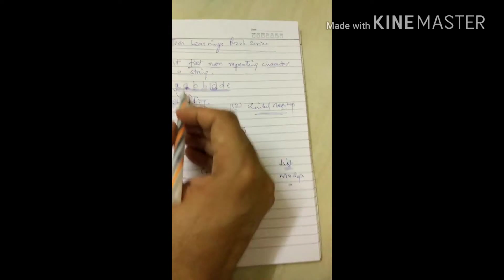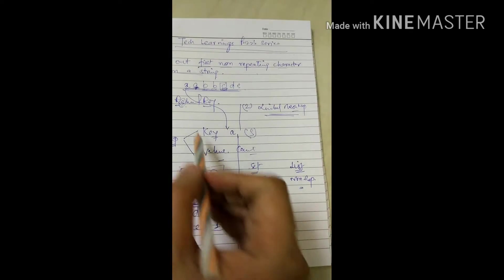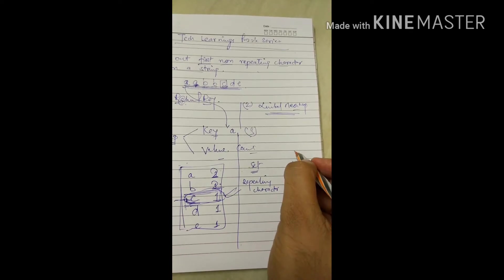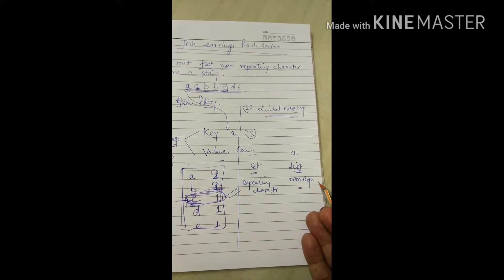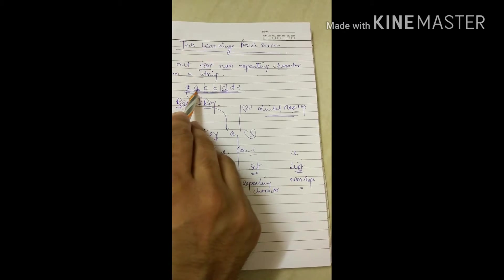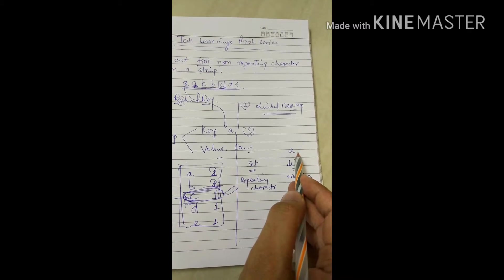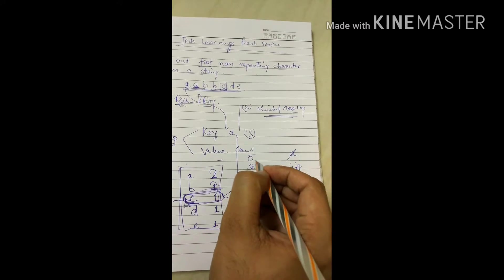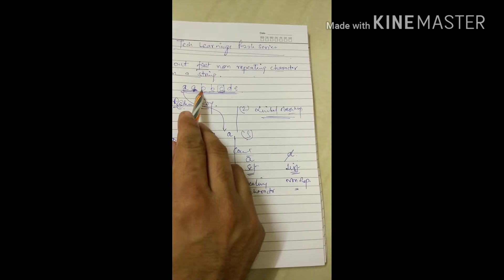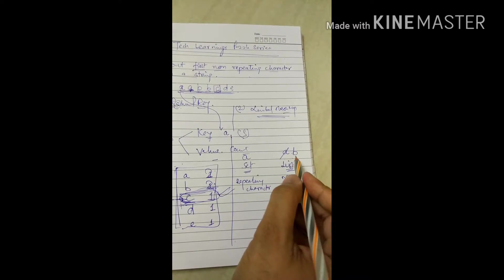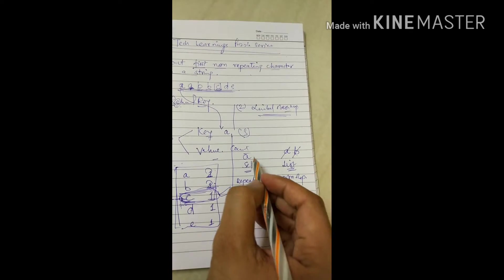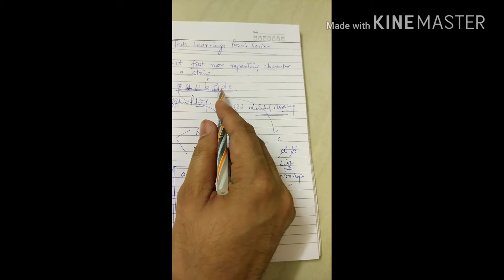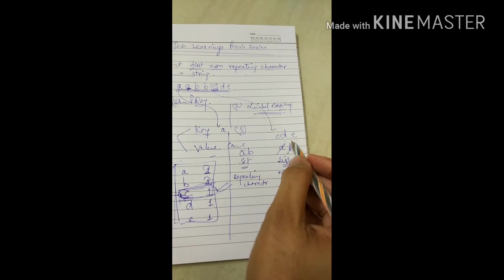You traverse your string. The first character is 'a' — check whether 'a' is present in the list. It is not, so add it, assuming it is non-repeating. Move to the next character, again 'a' — it is present in the list, so we know 'a' is repeating. Remove it from the list and add it to the set. Next is 'b' — not in the list, so add it. Again 'b' — remove it from the list and add it to the set. 'c', 'd', 'e' are not in the list so we add them.